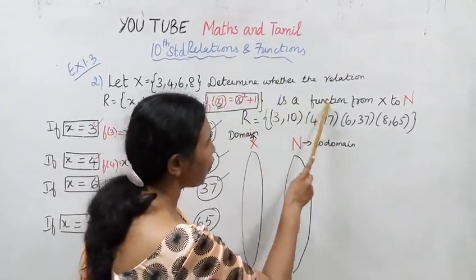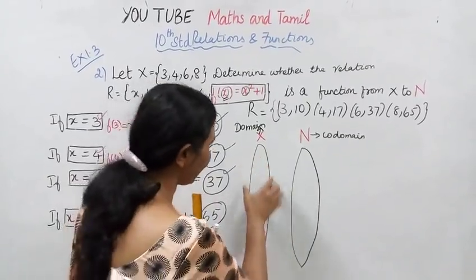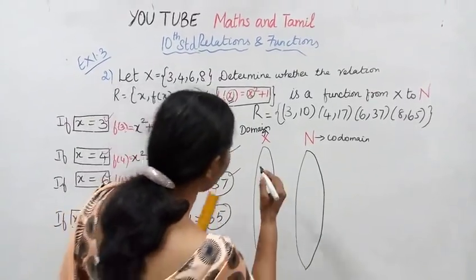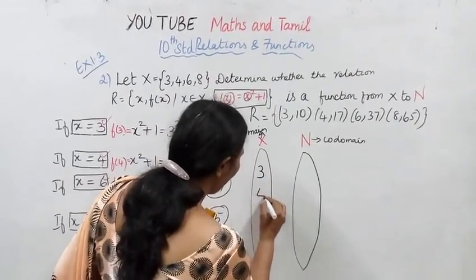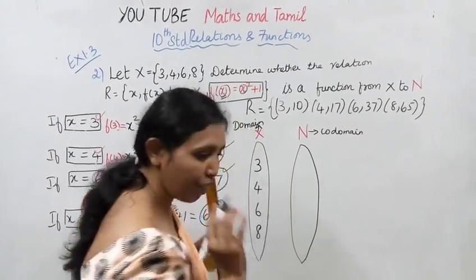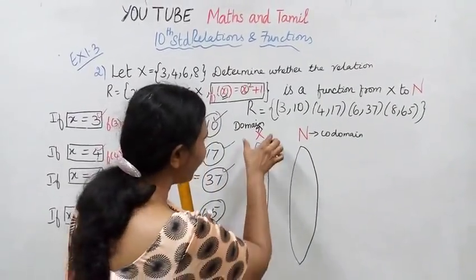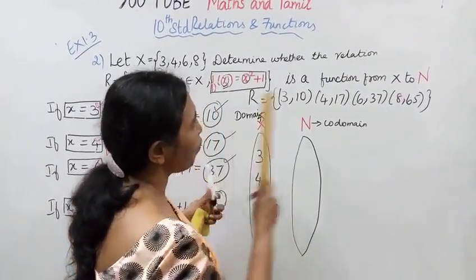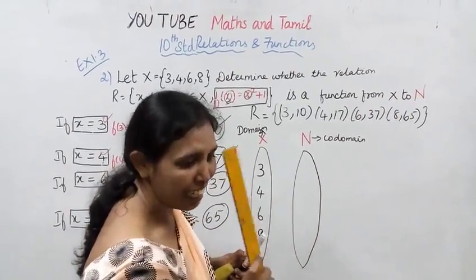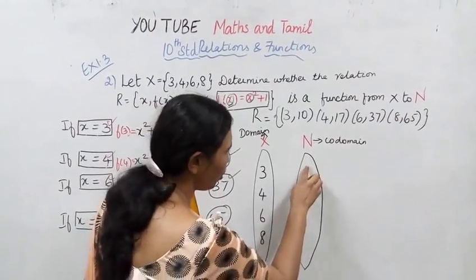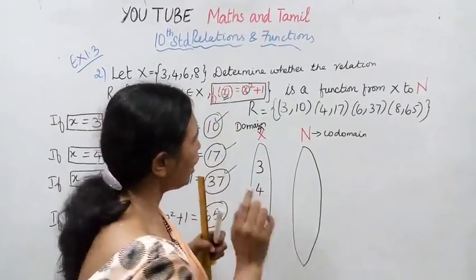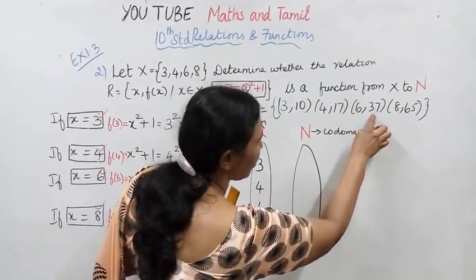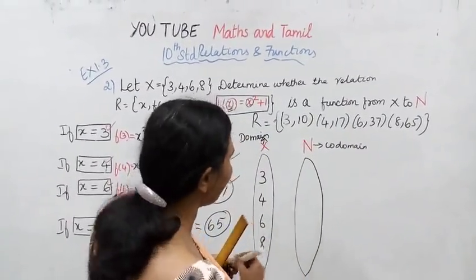The relation is a function from X to N. Here, X is the domain and N is the codomain. X has values {3, 4, 6, 8}. These are the values of the function from X to N. So the pairs are (3,10), (4,17), (6,37), (8,65). This gives us the function from X to N.